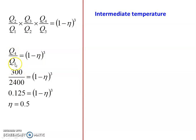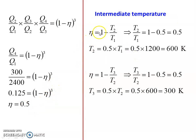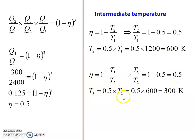The efficiency value is 0.5, that is 50%. Now calculating intermediate temperatures. Eta equal to 1 minus T2 by T1, so T2 by T1 equal to 1 minus 0.5 equal to 0.5. Therefore T2 equal to 0.5 into T1 equal to 0.5 into 1200 equal to 600 Kelvin. For the second engine, Eta equal to 1 minus T3 by T2, so T3 by T2 equal to 0.5. Therefore T3 equal to 0.5 into T2 equal to 0.5 into 600 equal to 300 Kelvin. So T2 equal to 600 Kelvin and T3 equal to 300 Kelvin.